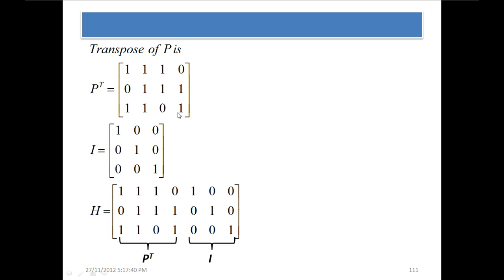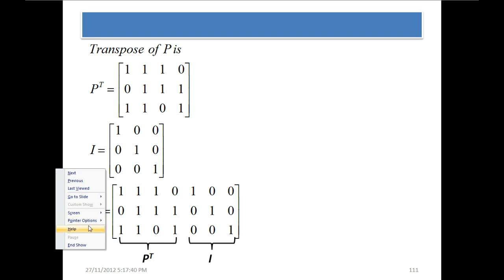After taking the transpose of P, we generate an identity matrix of size 3×3, because the number of parity bits for this code is 3. Then we write them together: first the parity transpose P^T, then the identity matrix, to form H.